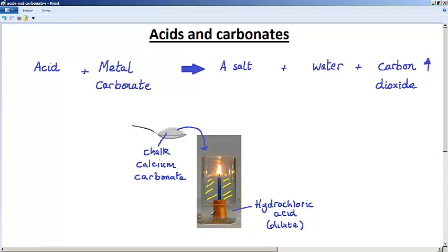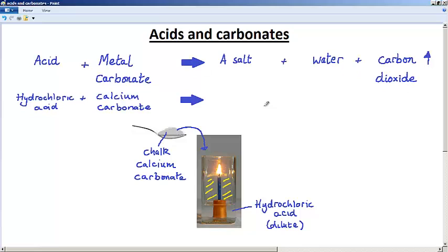So the calcium carbonate reacts with the hydrochloric acid producing carbon dioxide which extinguishes the flame, also producing water and a salt. Let's write out the specific equation for this reaction. Hydrochloric acid plus calcium carbonate. The salt will be made from the calcium from the metal in the metal carbonate and the chlorine in the hydrochloric acid. So the calcium will combine with the chlorine in the hydrochloric acid to form calcium chloride plus water plus carbon dioxide.